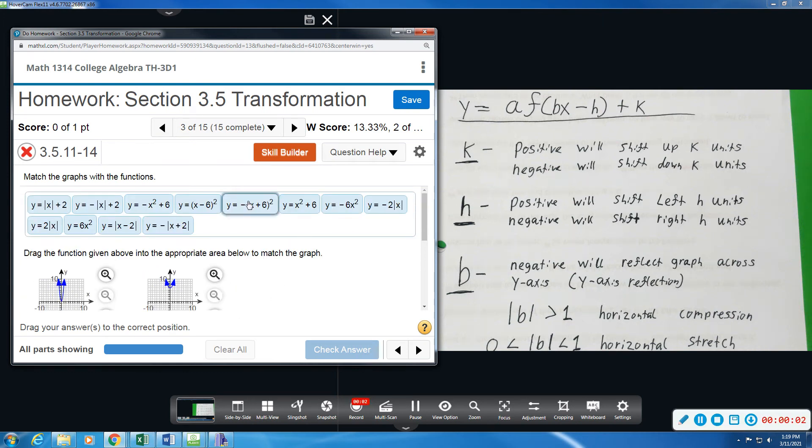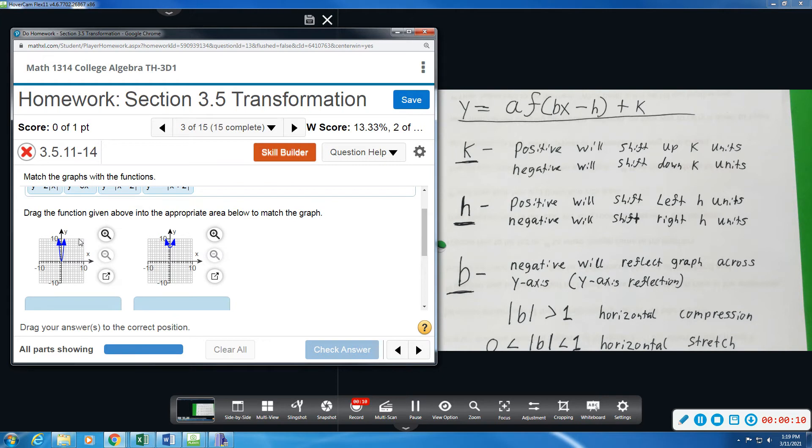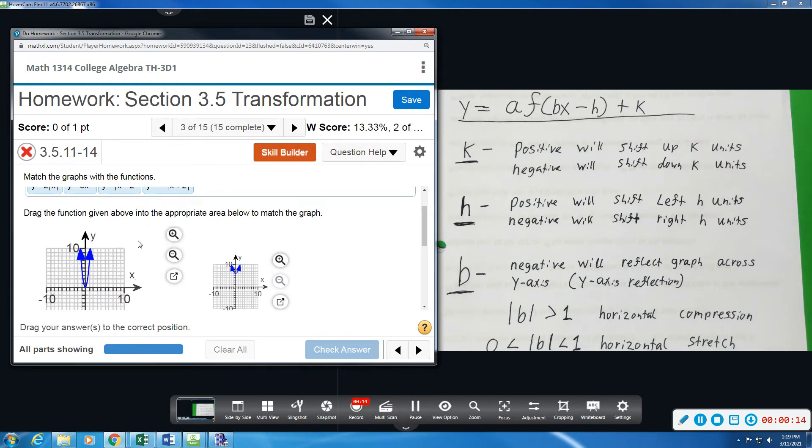Okay, number three. We have another example where we're going to match up the equations with the graphs below. This first one that we see is again a quadratic x squared, and its appearance looks to be a lot thinner, skinnier than the original.